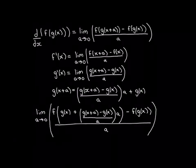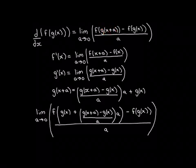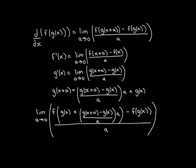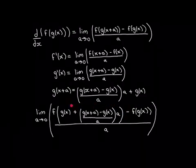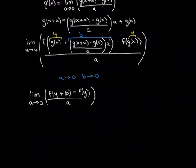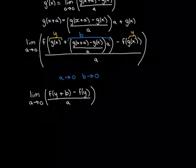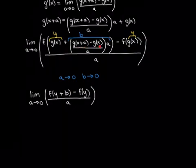Having performed that substitution, I've placed this expression in place of g of x plus a and rearranged slightly, putting g of x at the front. So we have f of g of x plus all of that extra term times a, minus f of g of x, all divided by a. This becomes quite involved, so we're going to rename a few things. We rename this entire term — g of x plus a minus g of x over a, times a — as b.